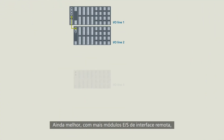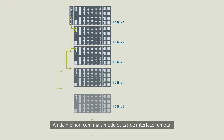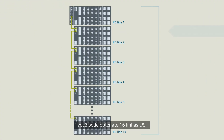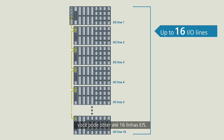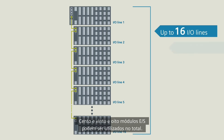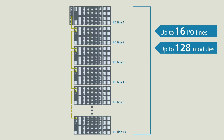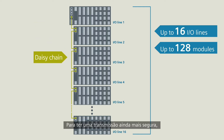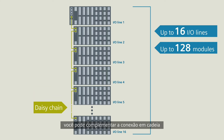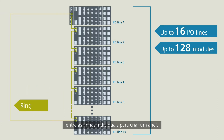Even better, with further I/O remote interface modules you can realize up to 16 I/O lines. 128 I/O modules can be used in total. For a higher degree of transmission security, you can complement the daisy chain connection between the individual lines to form a ring.